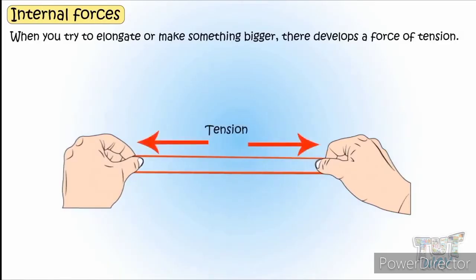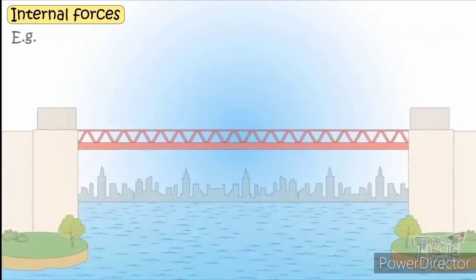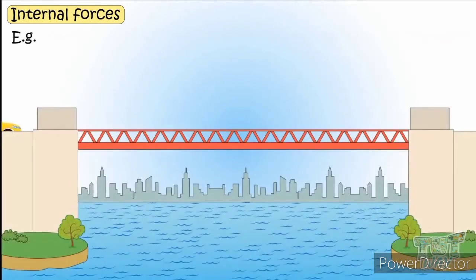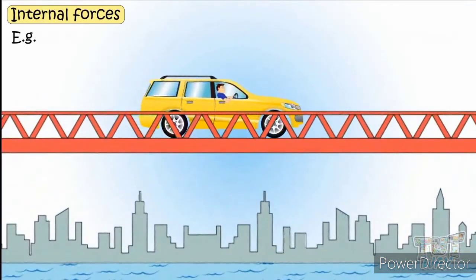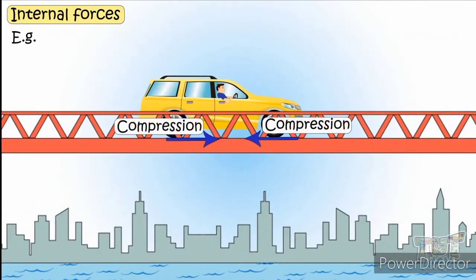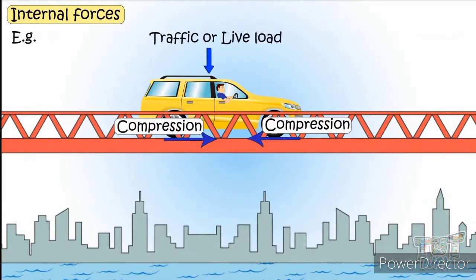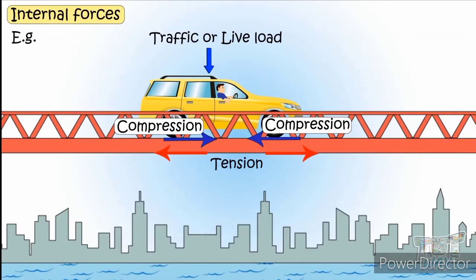A very good example of both compression and tension together is a bridge. When a car passes over the top part of the bridge, the top part experiences compression because of the downward push from the weight of the car. The underside of the bridge, made with iron, experiences tension because the weight of the car is pulling it downward while the bridge stretches.